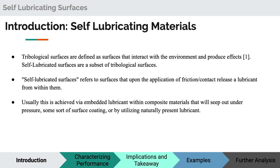We can split up self-lubricated surfaces into three primary kinds of classifications: embedded lubricant materials, materials that utilize lubricant from their environment, and finally materials that use a surface coating of some sort to achieve this property. In addition to this we can also observe self-lubricating properties within biology. An example of this is how ducks excrete oil to coat their feathers in order to achieve better buoyancy in the water.